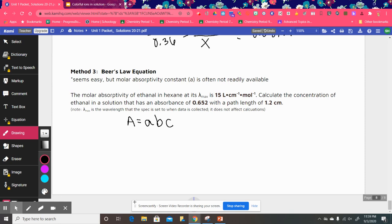So we have the absorbance equals the molar absorptivity times the path length in centimeters times the concentration. And we're going to find the concentration here. So we're going to put in our absorbance that was collected. This 0.652 equals the constant, 15.